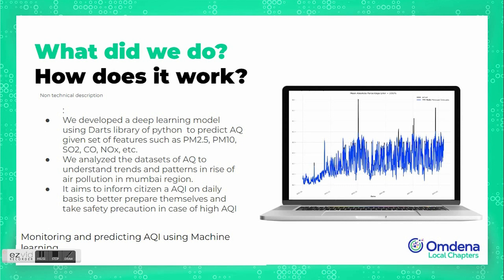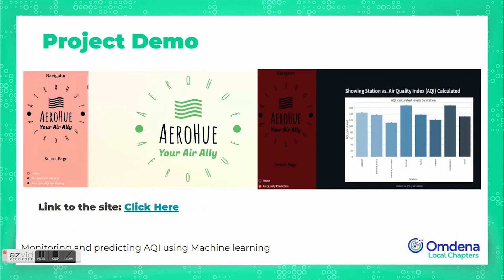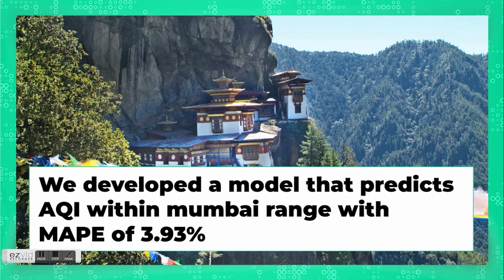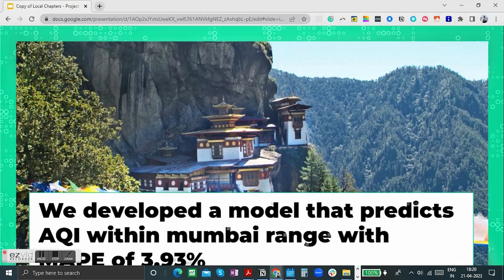Our aim was to build an efficient and accurate AQI monitoring system that predicts AQI on a daily basis and informs citizens about what precautions they should take before going out. To conclude the slides: the model we developed predicts AQI within a MAPE of 3.93%, which is a highly accurate result.